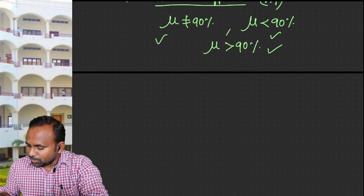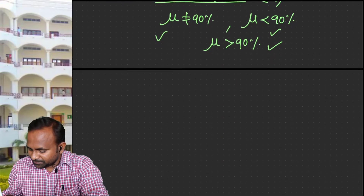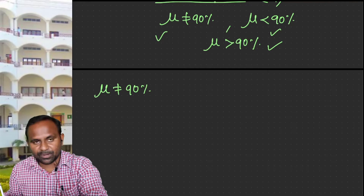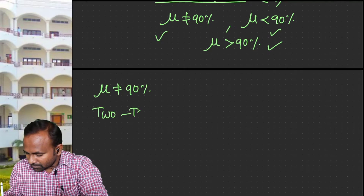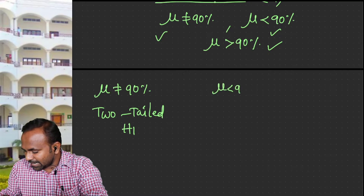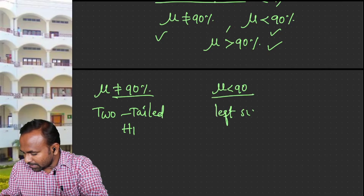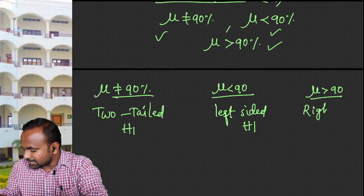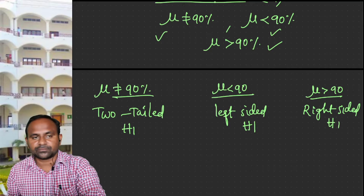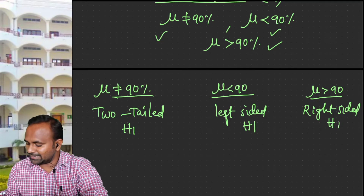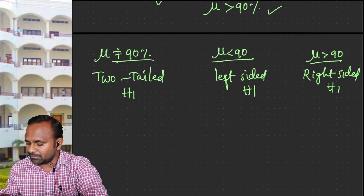Here we must look into three different phenomena. If your alternative hypothesis is of the not-equal-to type, we name it as a two-tailed or two-sided alternative hypothesis H1. If it is of less-than type, it is said to be a left-sided alternative hypothesis. If it is of greater-than type, it is called a right-sided alternative hypothesis H1. The alternative hypothesis can be any of these three — two-tailed, left-tailed, or right-tailed — depending upon our choice.